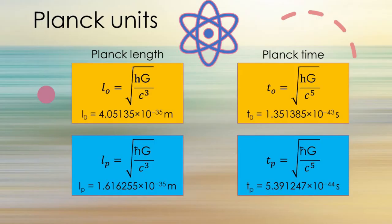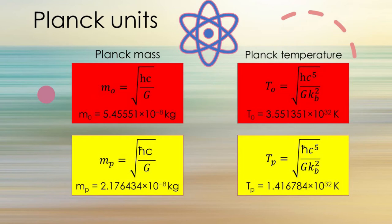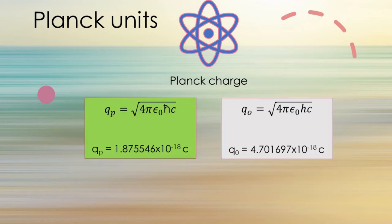Here we have Planck length and Planck time — the original units on top and the modern units below. The difference in both cases is the square root of 2π. For Planck mass and Planck temperature, the original units are on top and the modern units on the bottom, again differing by the square root of 2π. Here is the Planck charge — the original unit on the right and the modern unit on the left — once again differing by the square root of 2π.